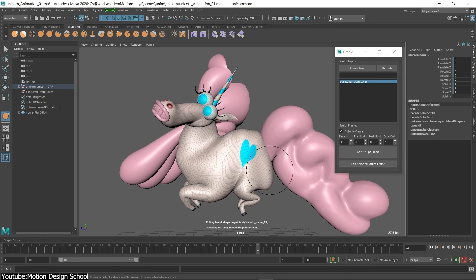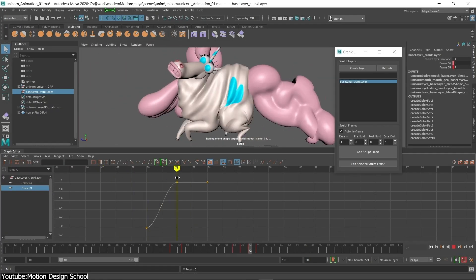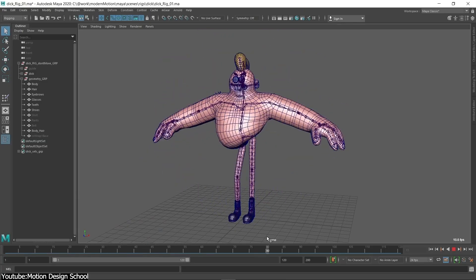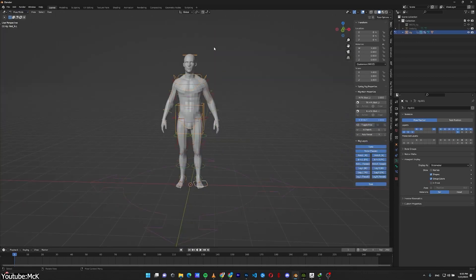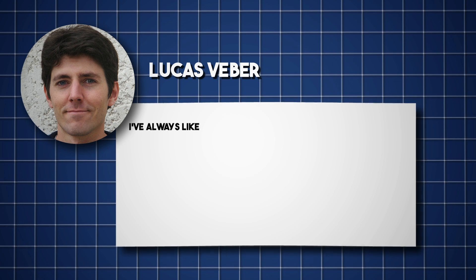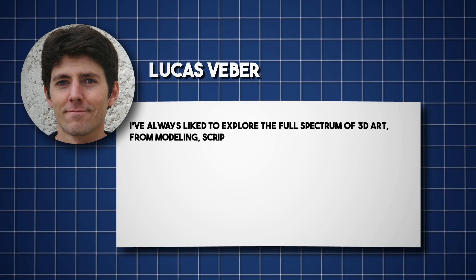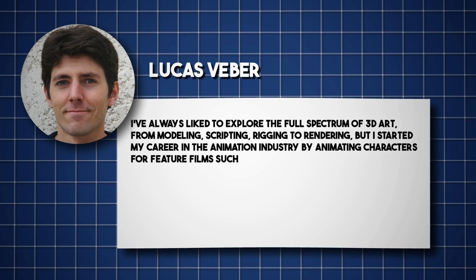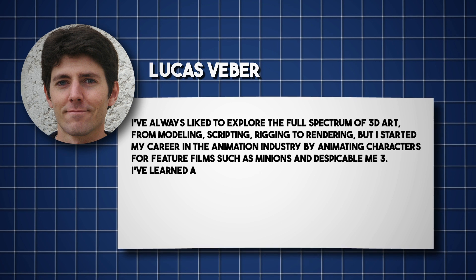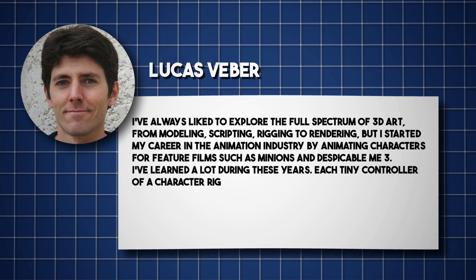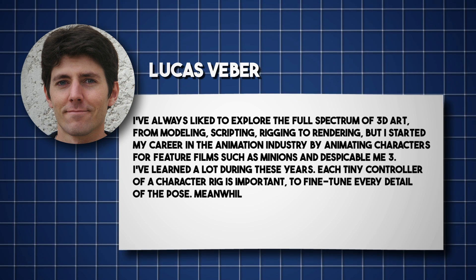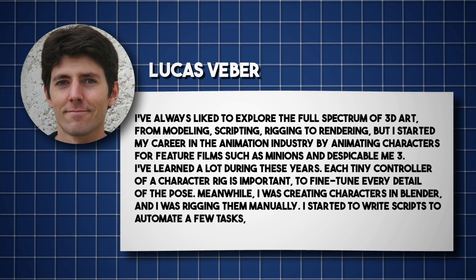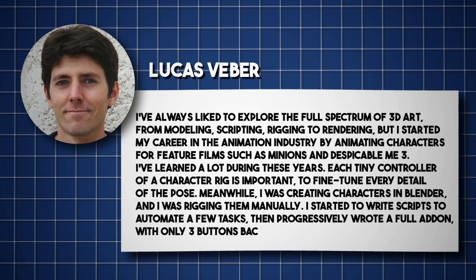Before the developer had his hands on Blender, he started his career working with other popular 3D software such as Max and Maya, which he learned in 3D art school and for job opportunities. After he started discovering the world of Blender, he noticed the fundamental rigging issues with the software. In his own words: 'I've always liked to explore the full spectrum of 3D art, from modeling, scripting, rigging to rendering. But I started my career in the animation industry by animating characters for feature films such as Minions and Despicable Me 3. I started to write scripts to automate a few tasks, then progressively wrote a full add-on, with only 3 buttons back then.'